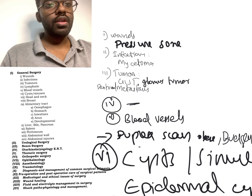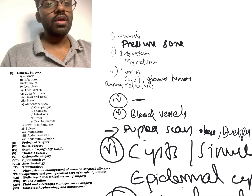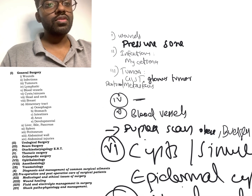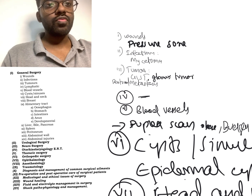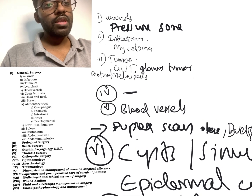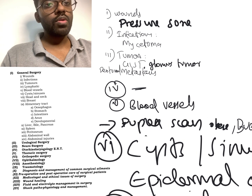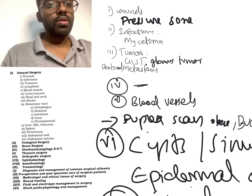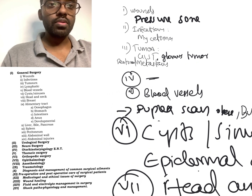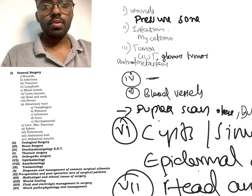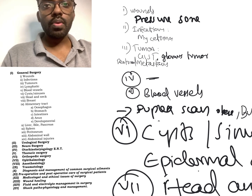Last year they asked about cellulitis, and previously they asked about infectious gangrene, so they can ask anything. From tumors, they have asked about GIST — gastrointestinal stromal tumor — and also about glomus tumor. They also asked about peritoneal metastasis, which actually comes under peritoneum, another topic covered separately.